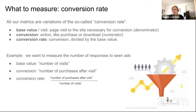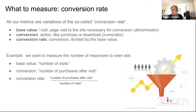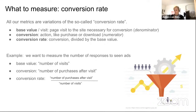Next is what to measure. All metrics were based on the conversion rate, a classical marketing KPI that can express any metric. The conversion rate consists of a base value or visit — a page visit necessary for conversion — and the actual conversion, which is the action you are interested in such as a purchase or download. The conversion rate is the conversion divided by the base value, which is why they are called numerator and denominator.